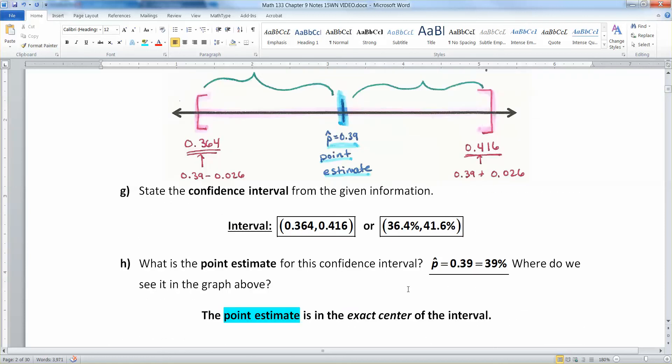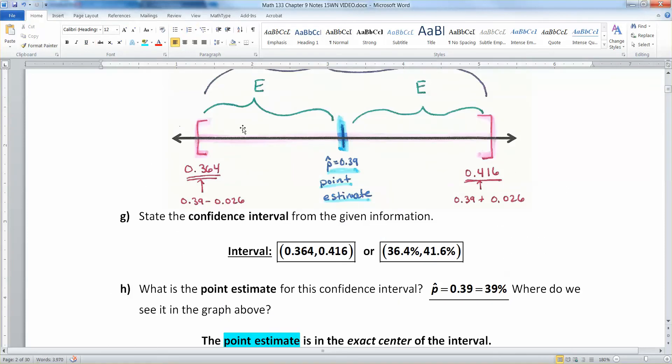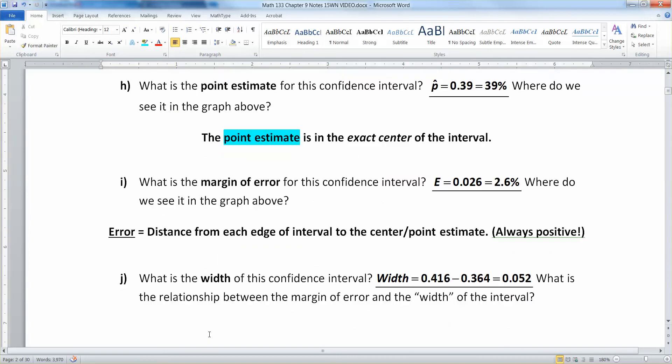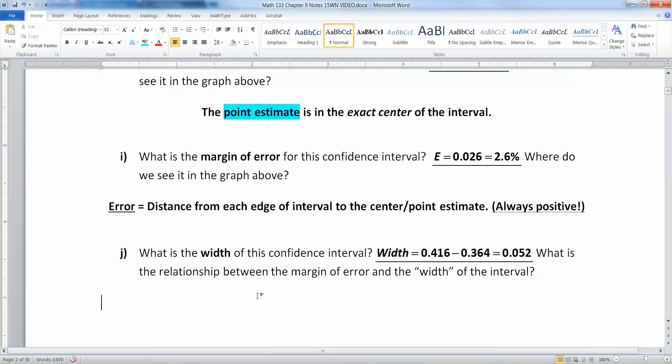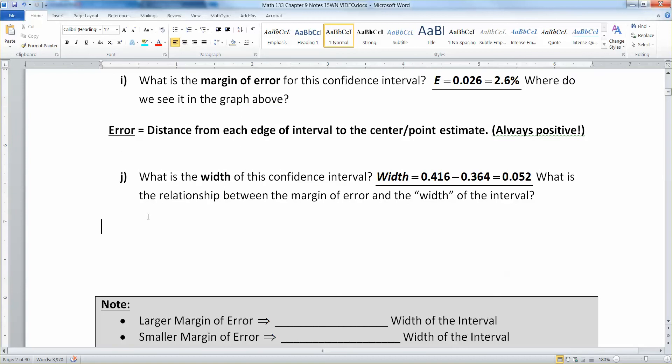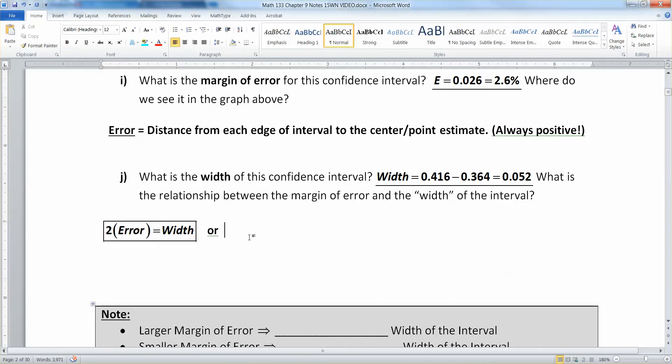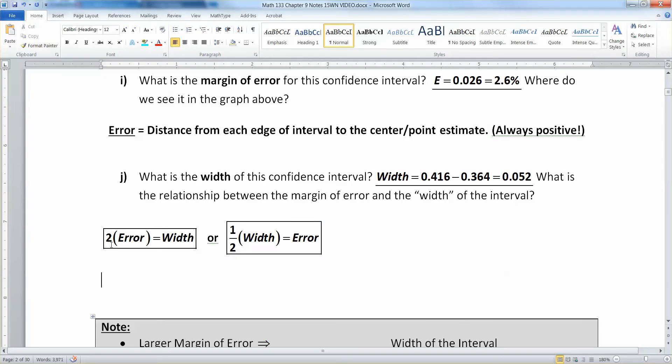Now the width of the interval is actually 0.052. Let me prove it to you. The width is the high number, 0.416, minus the lowest number, which is 0.364. And when you subtract those two, you're going to get 0.052. Now that might look a little bit familiar. And that's because there's a relationship going on here. The width is the entire pink zone. So that pink zone, and then the error is the green part. But there's two errors to make up the width. So two times the error makes the width. Two times the error makes the width. Or in other words, half the width is equal to your error.